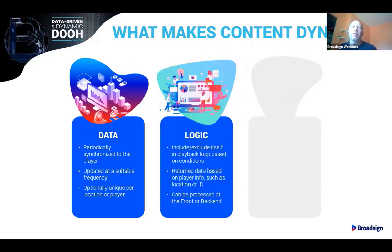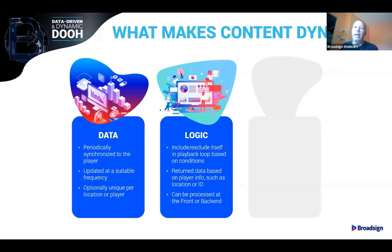The second component of dynamic content is the logic — this is what's used to alter the behavior. This can be playlist-based logic, like whether or not to include the content. For example, if the Lotto result is over 20 million, include it in the loop; if not, pull it. Or it can be content-adapting logic, like switching out the location logo and color scheme if the content runs in different modes. Where the logic is processed is up to the developer — it might be split between the backend and the content on the player, and you can have logic on both the player and the server.